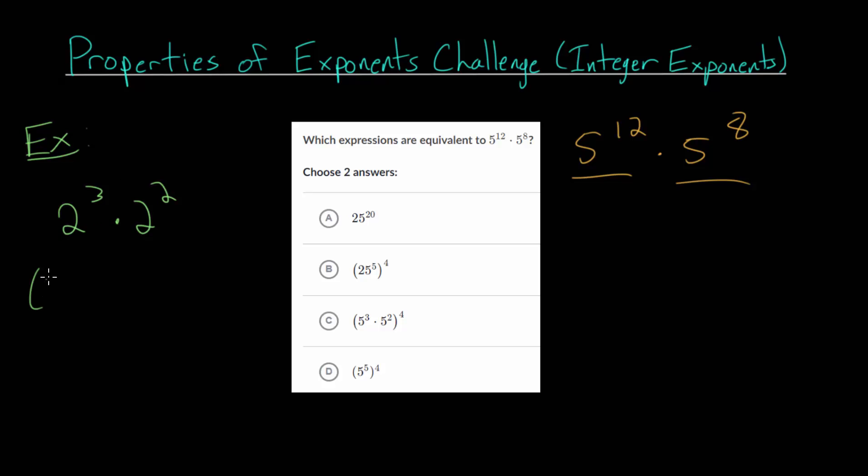2 to the 3rd is really just 2 multiplied 3 times, and 2 squared is really just 2 multiplied twice. Notice there are 5 of these 2s now multiplied together.